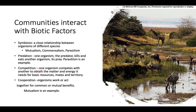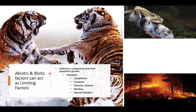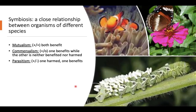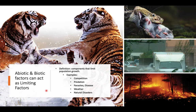Another example of organism interaction is competition — when one organism competes with another to obtain the matter and energy it needs for basic resources, mates, and territory. Competition can occur within the same species, like tigers competing for a mate, or between different species competing for water or food. Cooperation means organisms work together for common or mutual benefit — for example, the butterfly pollinating the flower.